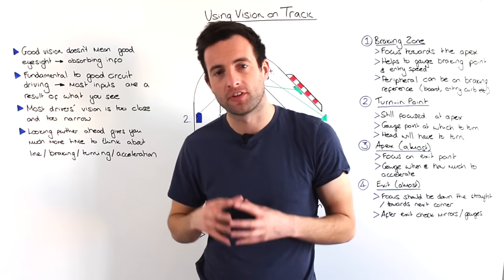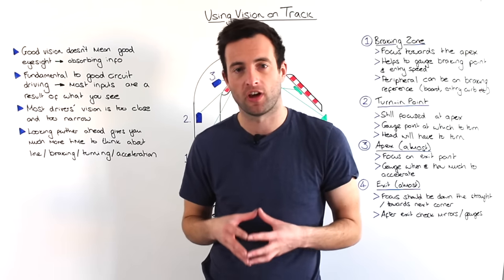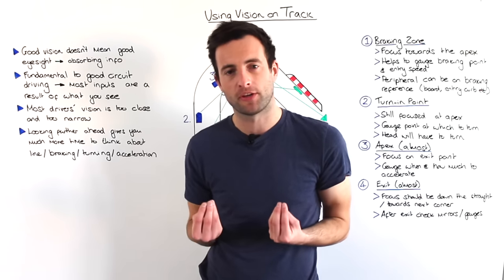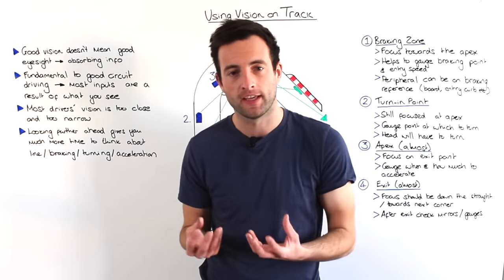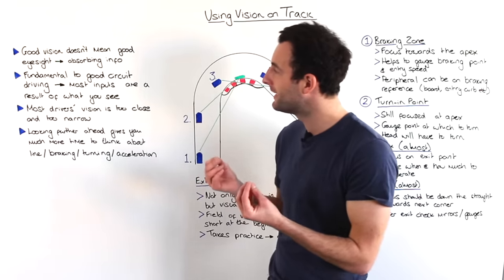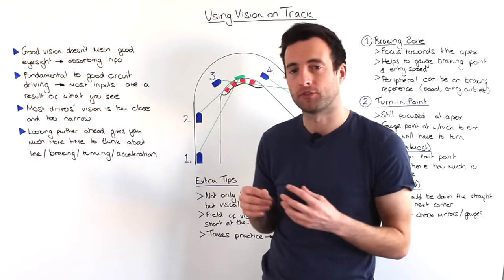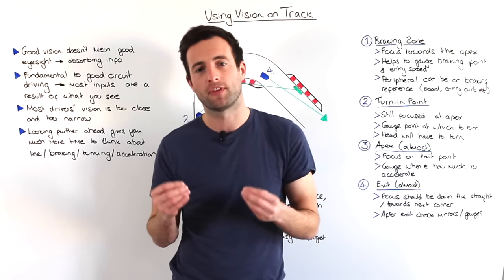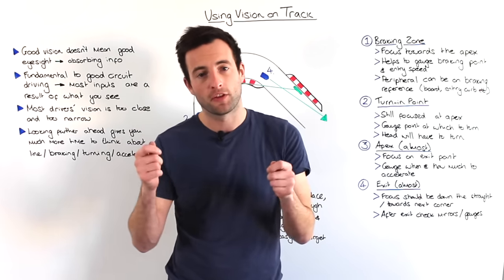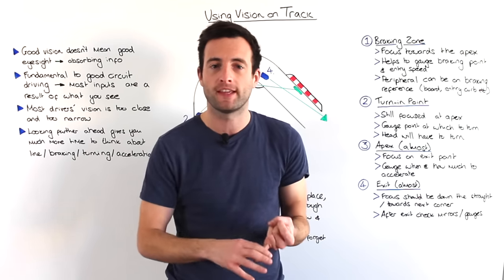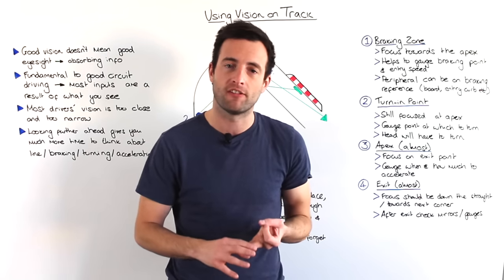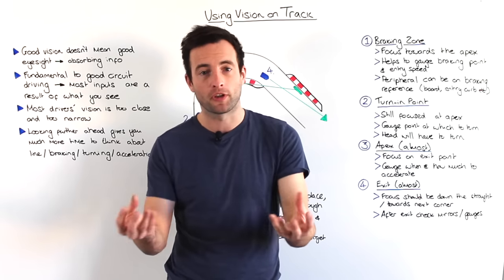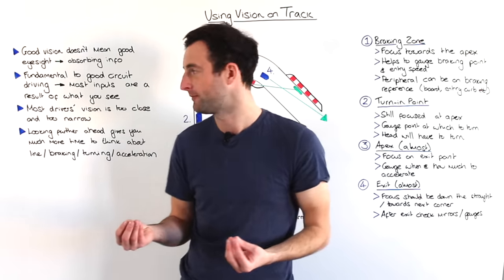Good vision doesn't necessarily mean just good eyesight. It means absorbing as much information from the circuit as you can, and it really is fundamental to good circuit driving, as most of the inputs that you put into the car — whether it be the brakes, the steering, or acceleration — all come from what you see around you on the circuit.